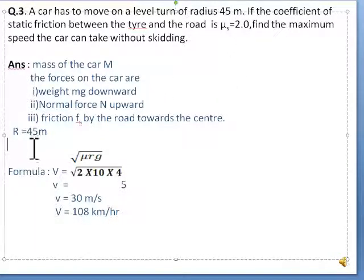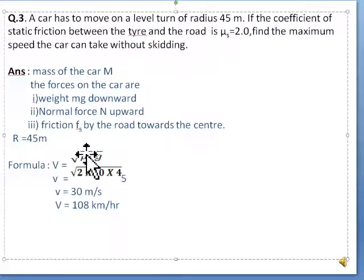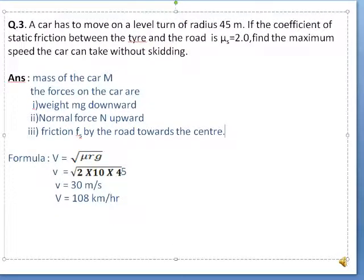Now substitute values. V = √(μRg). μ is given 2, R is 45, g is 10 m/s². Substitute coefficient of static friction 2, g, and 45 is the radius of that curve turn.